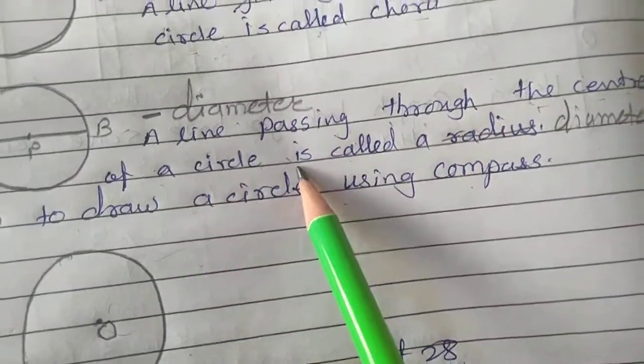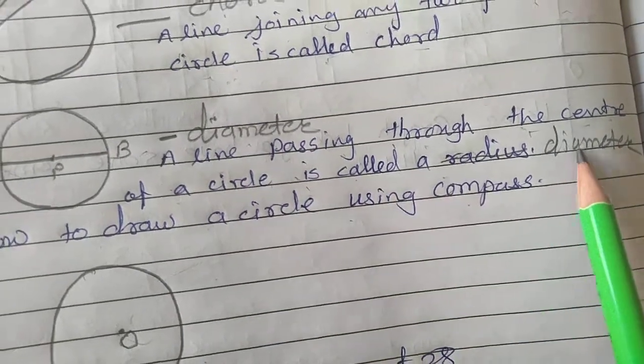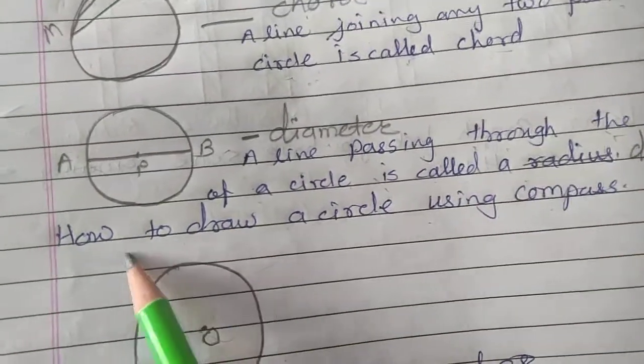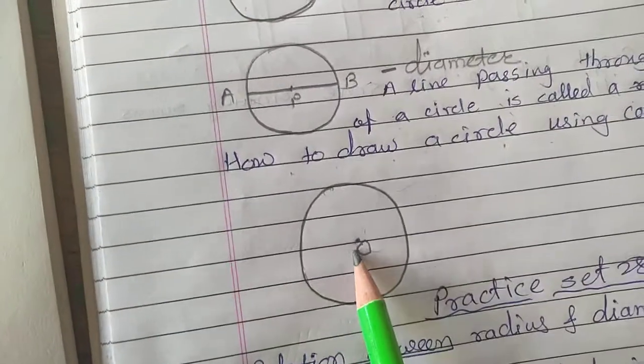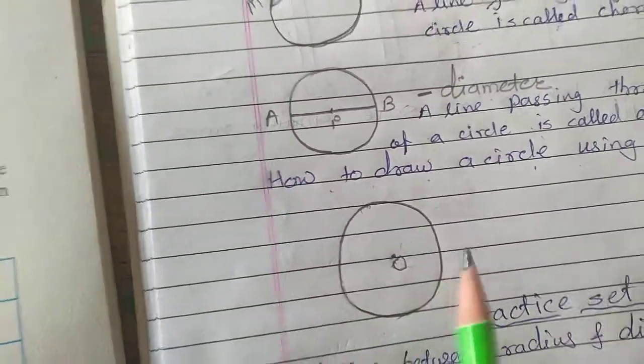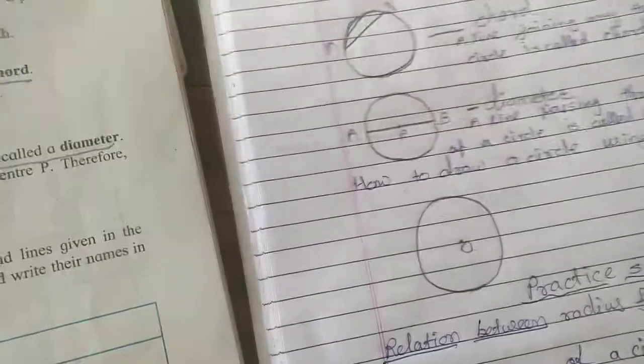Now, how to draw a circle using compass. Here, center: put a dot on the paper and name it as O.